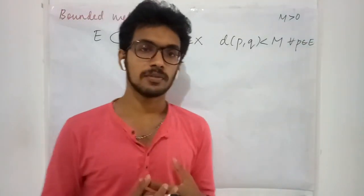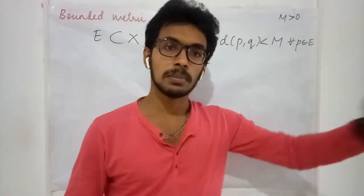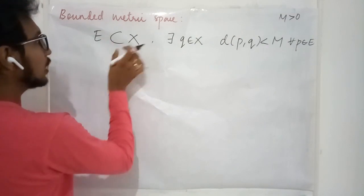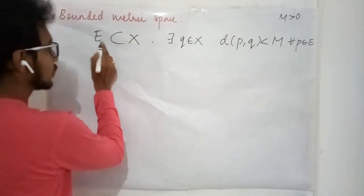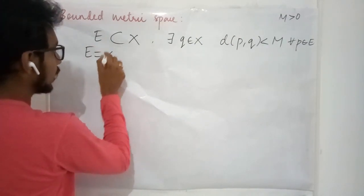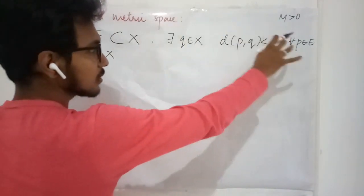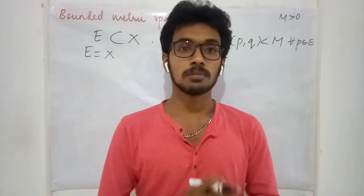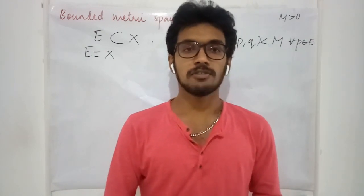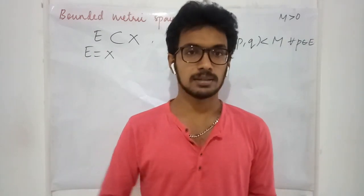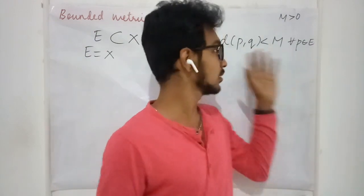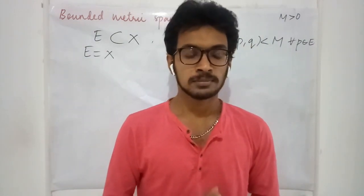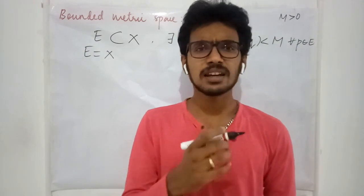With the definition of a bounded set, we are going to extend it to a metric space. We know that every set is a subset of itself, so when you consider E to be the entire space and if it satisfies this condition, then we may say it is a bounded metric space — that is, if all the elements in the metric space satisfy this condition.